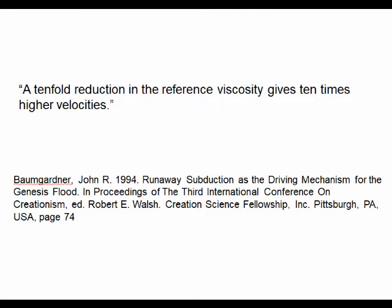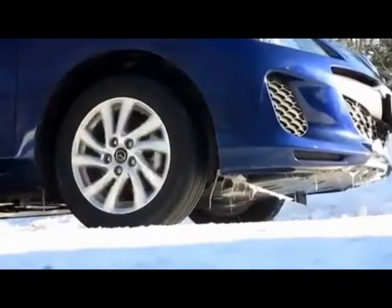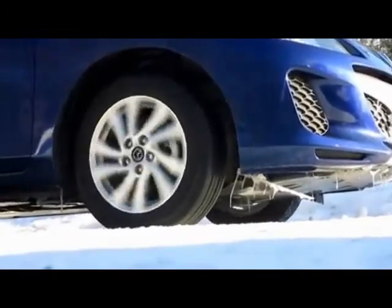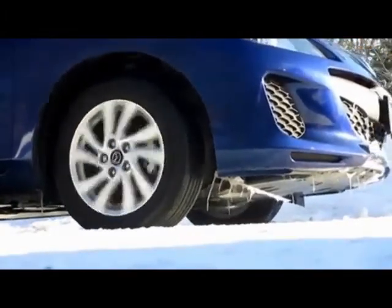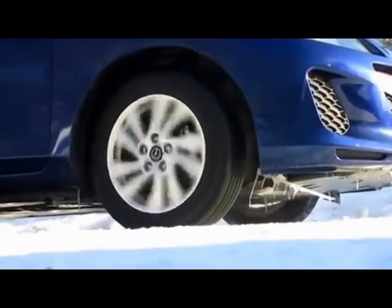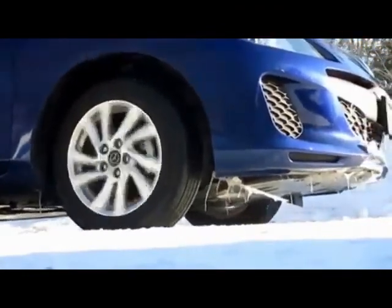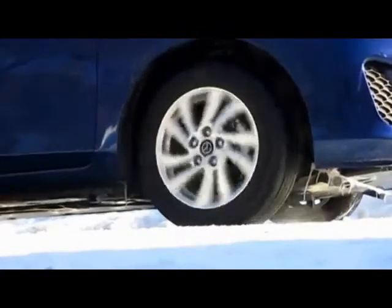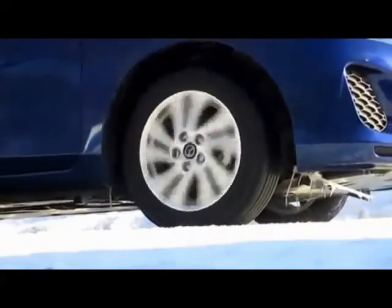But then that causes a problem. The churning convecting mantle is supposed to move the crust. Yet the more fluid the mantle, the less friction, the less traction it would have on crust above it. The more fluid the upper mantle, the less pull it has on the crust.